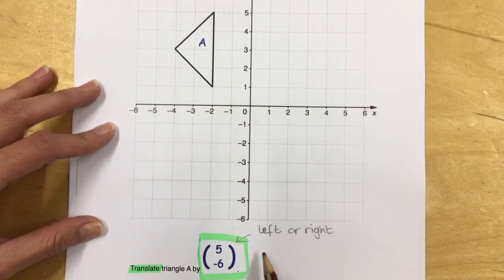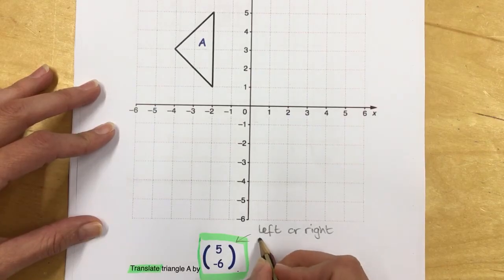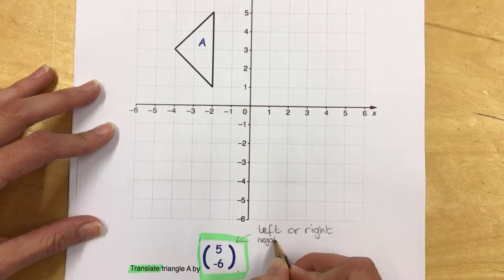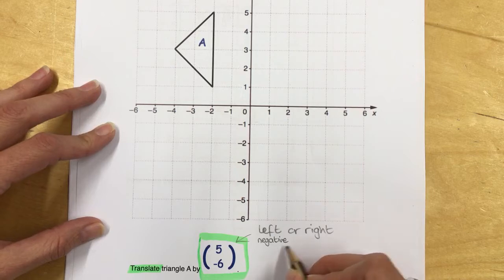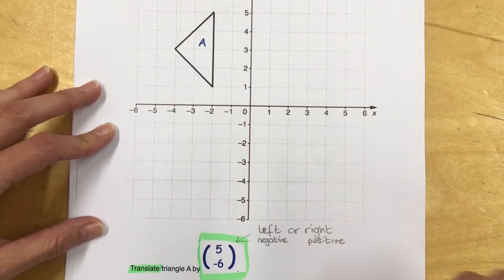If the value is negative on top, it moves left. If it's positive on top, it moves right.